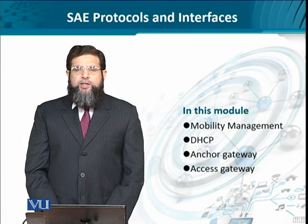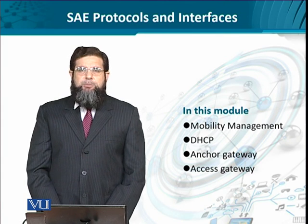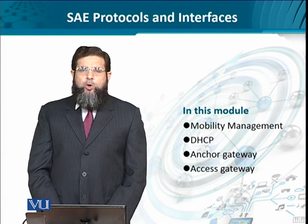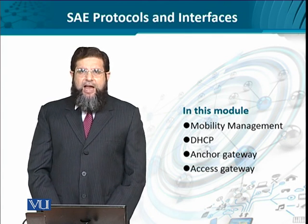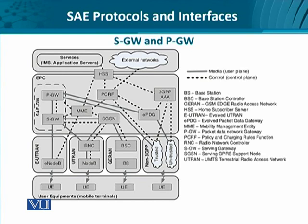Let us continue with our understanding a little deeper about the protocols and interfaces. We are going to look at the most important functionality of mobile broadband networks — mobility management — and the role of DHCP within the Evolved Packet Core, the concept of anchoring at the gateway level, and the concept of access at the gateway level. Our scope here is the serving gateway and the packet gateway together, which can be implemented in a conjoined manner known as the System Architecture Evolution gateway, shown through a dotted block containing two sub-blocks.